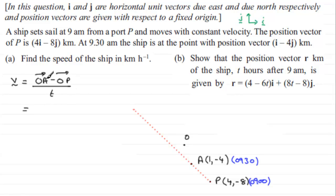So O to A if we write it as a vector is going to be i minus 4j. And from that we subtract O to P which is the vector 4i minus 8j. And we're dividing this by the time taken which is half an hour going from nine o'clock to nine thirty. So if we work this out we've got i minus 4i which is minus 3i. And then minus 4j minus minus 8j which is going to be plus 4j. And all of this is divided by a half. And if you divide this by a half you end up with minus 6i plus 8j.